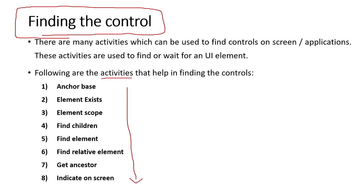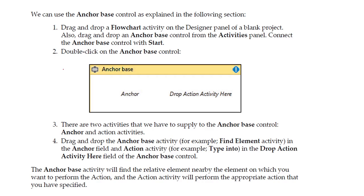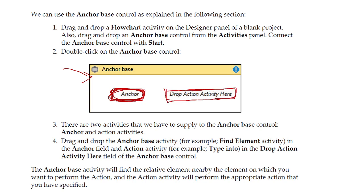These are the different activities available in the UiPath platform to find controls. We already completed the discussion on Anchor Base, which as the name says is used to locate a UI element by looking at a neighbor or relative element to the target element. Anchor Base comes with two entities: the anchor, which uses Find Element activity to specify the target, and the drop action activity which specifies the action to be performed on the target element.